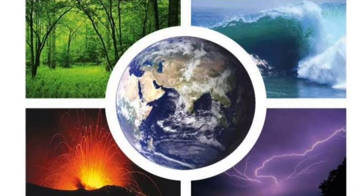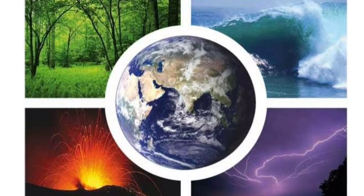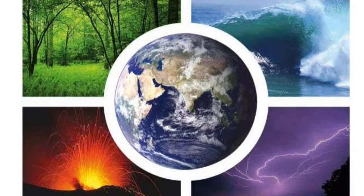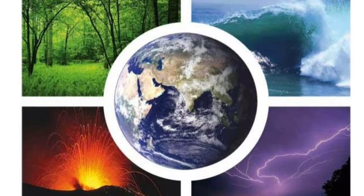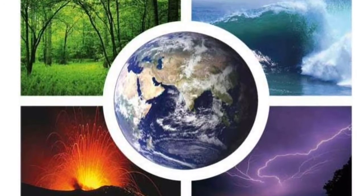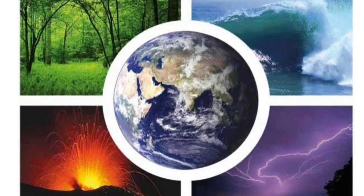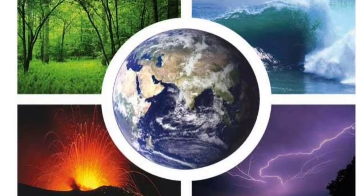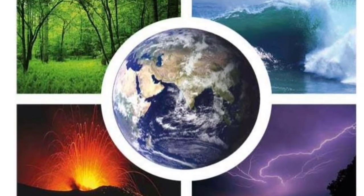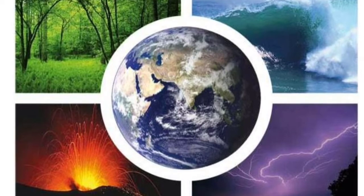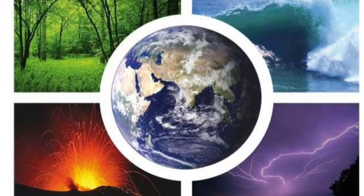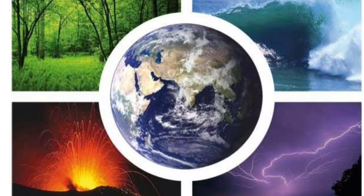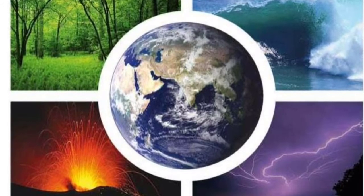How does matter and energy flow across the four subsystems of the Earth? The Earth consists of four subsystems across whose boundaries matter and energy flows: the atmosphere (air), biosphere (living things), hydrosphere (water), and geosphere (land). The atmosphere provides the geosphere with heat and energy needed for rock breakdown and erosion.